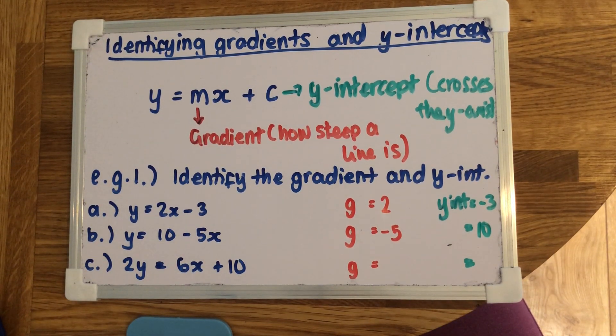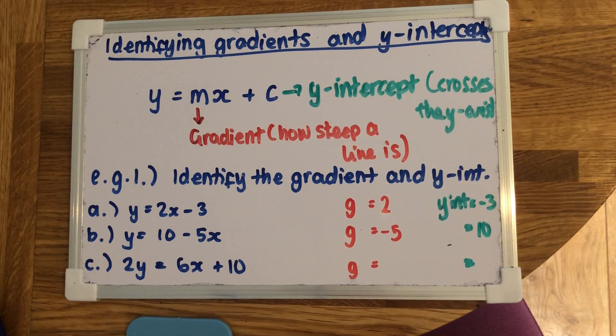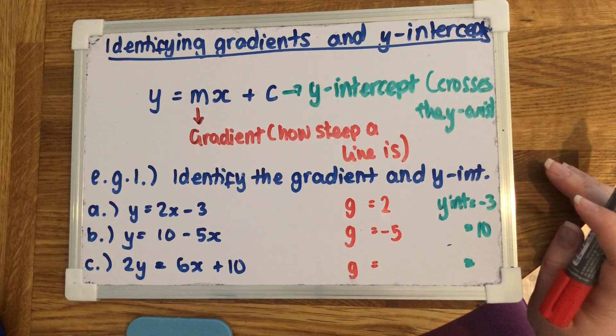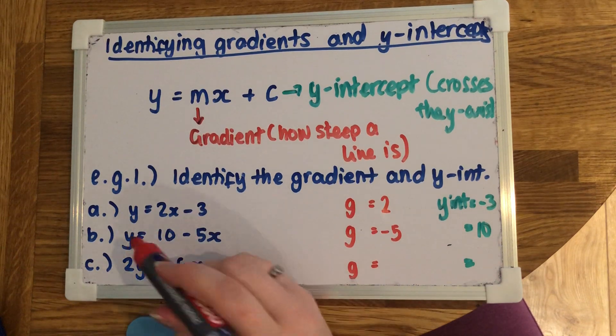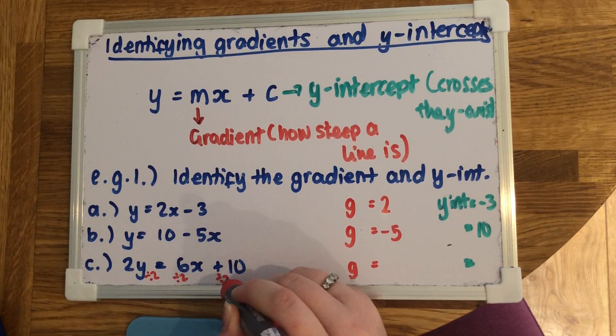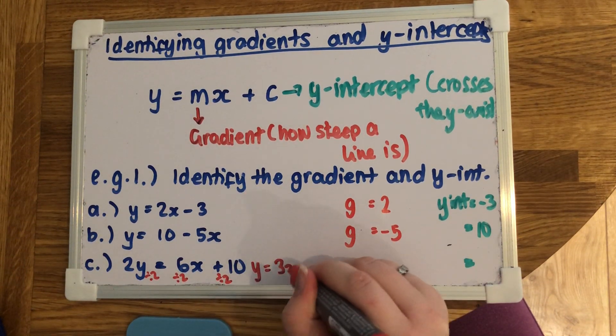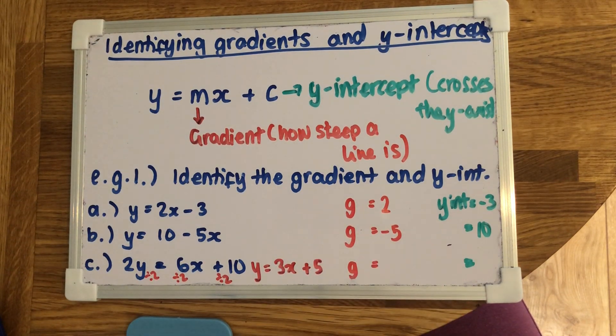Now as I said before, I did say some will not have this form, like the last one. But to be able to find the gradient and the y-intercept, it has to be in that form. So I don't want it to have 2y here. I just want 1y. So to sort that out, we need to divide the whole equation by 2. And we'd get y equals 3x plus 5. And then we can do the same thing as above.